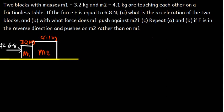In this video, we are going to talk about contact forces. Here's the question: Two blocks with masses M1 = 3.2 kg and M2 = 4.1 kg are attached to each other on a frictionless table. If the applied force F = 6.8 N, Part A: what is the acceleration of the two blocks? Part B: with what force does M1 push against M2? Part C: repeat A and B if F is in the reverse direction and pushes on M2 rather than M1.